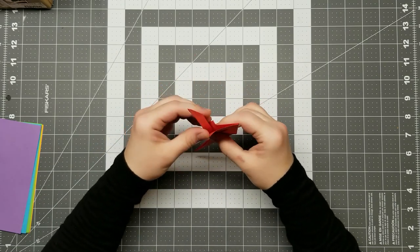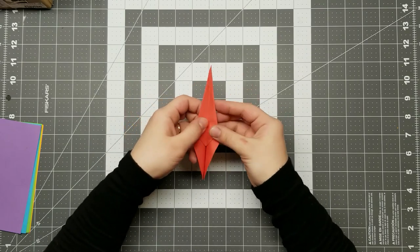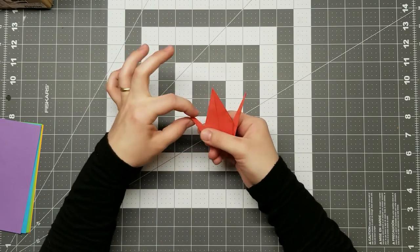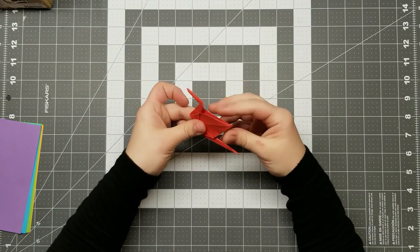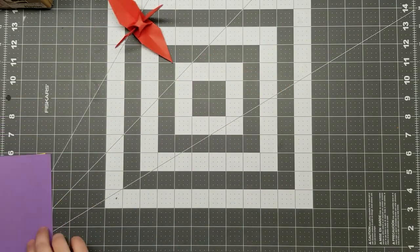I bought a book of crane instructions that included paper and taught myself how to fold one for the first time in 2013 at age 22. I couldn't get enough origami after that, and eventually learned more and more models.